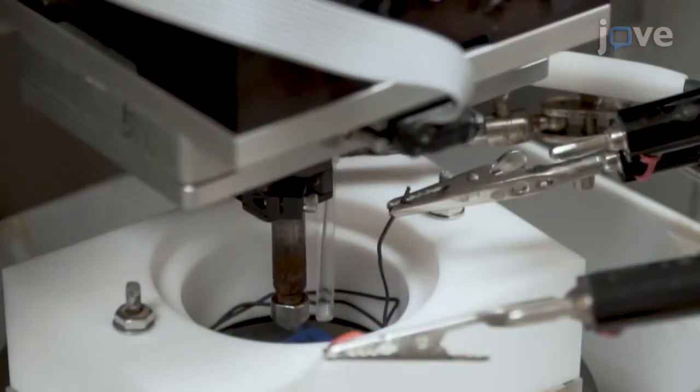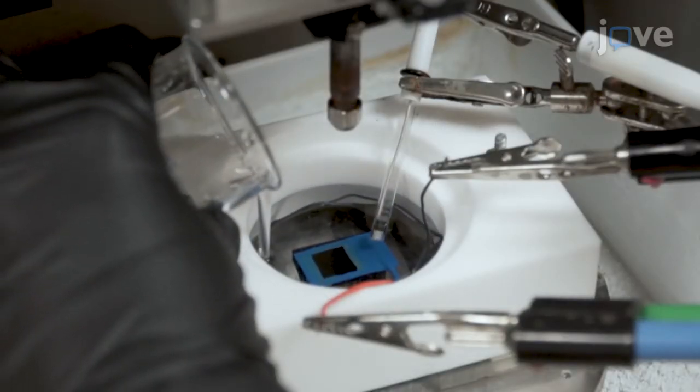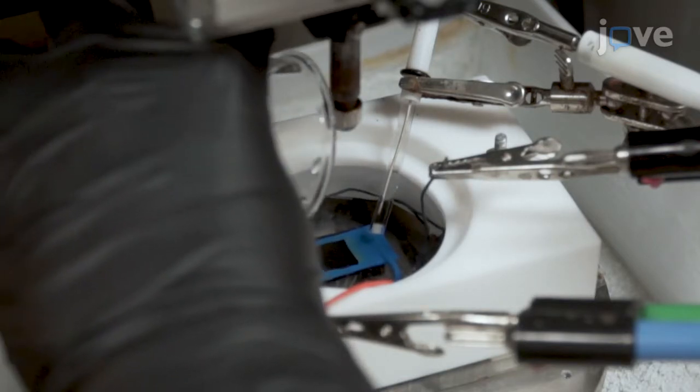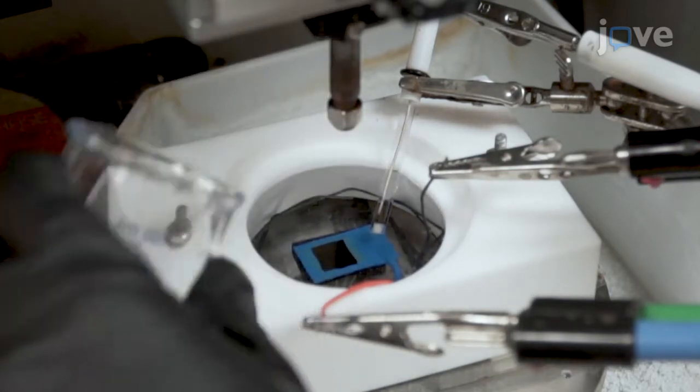Move the indenter forward 200 millimeters and pour 3.5 weight percent aqueous sodium chloride solution into the corrosion cell until the electrodes, probe, and sample surfaces are immersed.